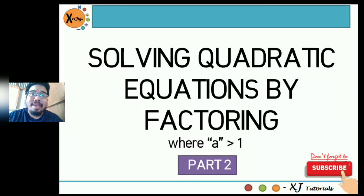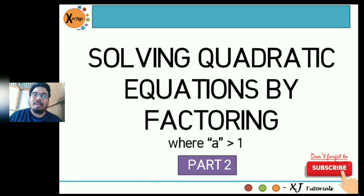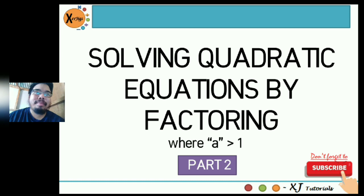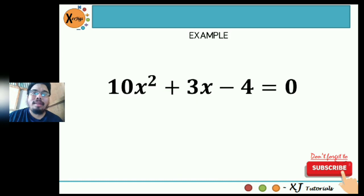Hi guys, good day. This is me again, Sir Jiggs. In today's session, it's actually the continuation of our previous topic, which is all about quadratic equations by factoring, but this time our leading coefficient or 'a' is greater than 1. Example: 10x squared plus 3x minus 4 is equal to 0.